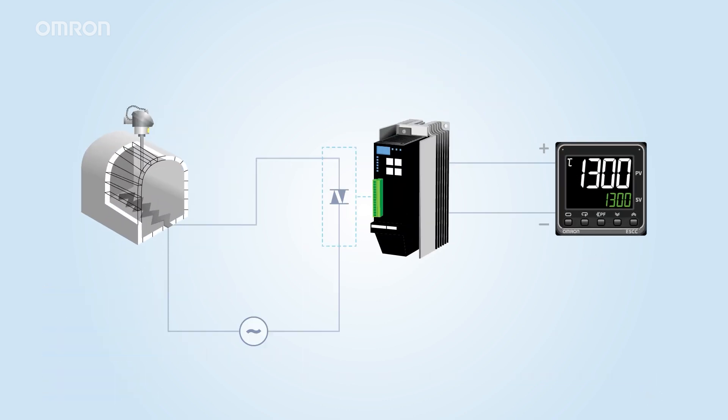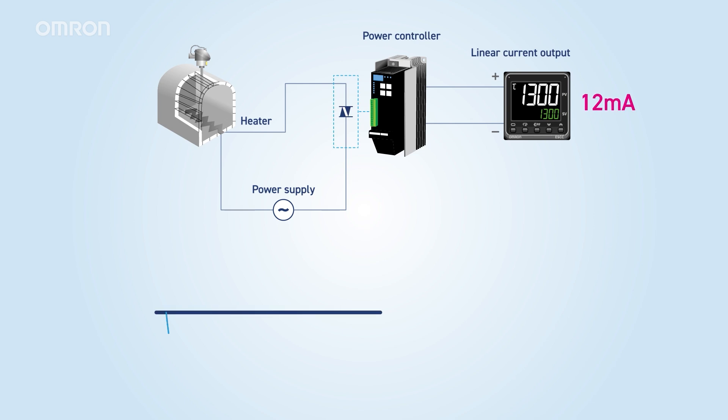When using a power controllers, a temperature controller with a linear current output type is used. The temperature controller continuously outputs a current of 4-20 milliamps to the power controller, which adjusts the on-time of the heater based on the current value.